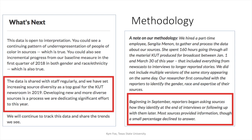One of the things KUT did was report on this extensively — it's on their website — sharing their methodology and why they were doing this. They also talked to their staff regularly about why they set the goal of increasing diversity in 2019: developing new and more diverse sources is a process they are dedicating significant effort to. In their source audit methodology, beginning in September, reporters started asking sources after interviews how they identify themselves — more specifically than might be obvious from just their occupation or what was used on air. Most sources provided the information; some didn't, and that was noted. Having that more complete picture of who they're actually talking to was the goal.